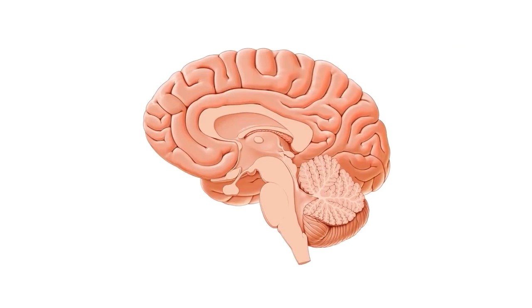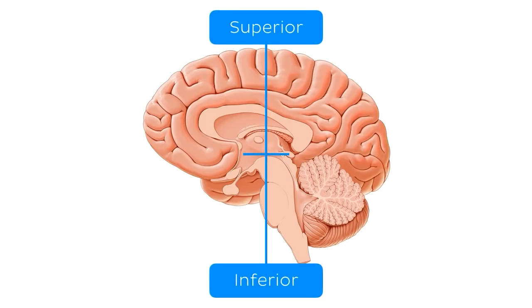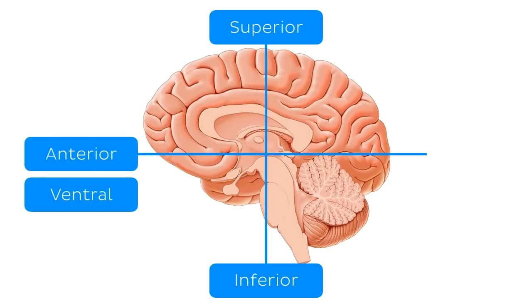For this part of the tutorial, we're going to be using this midsagittal section of the brain. And of course, when it comes to labelling our directions, we have the superior aspect over here, the inferior aspect over here, the anterior or ventral aspect over here, and our posterior or dorsal aspect over here.